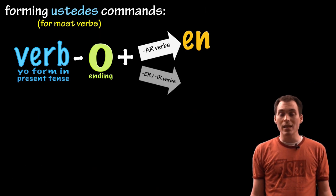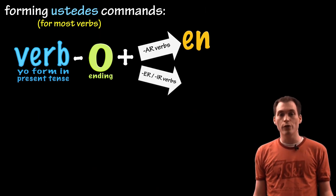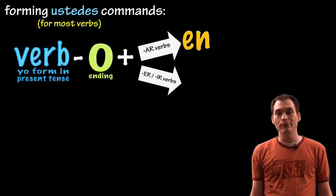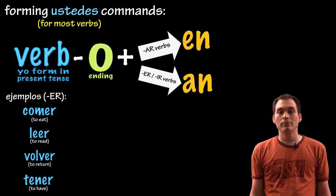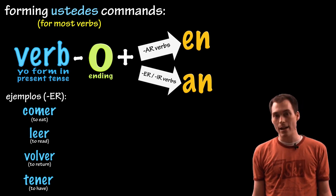Now if we wanted to do an ER verb, then we're going to take the verb in the yo form, take off the O and add AN. Some examples. Comer, leer, volver, and tener.